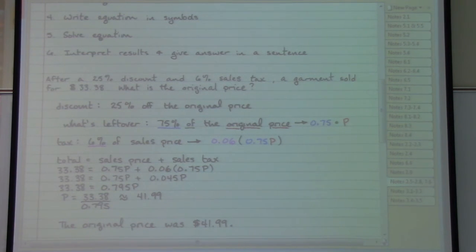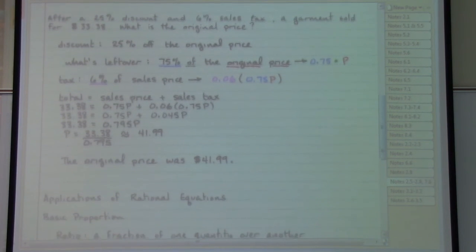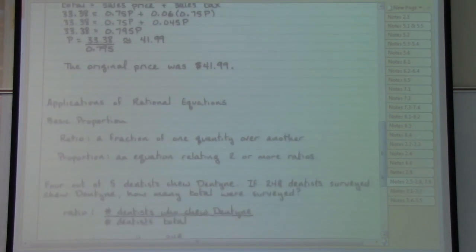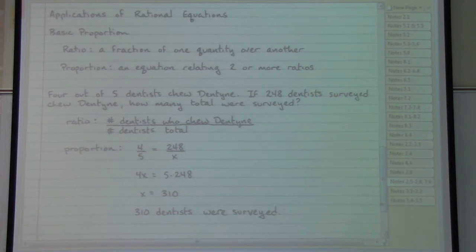One of the specific types of problems that can appear here, as well in the homework, connects to another idea worth mentioning, which is the idea of a ratio. So as an example of that, we'll refer back to one of the old chewing gum commercials. 4 out of 5 dentists chew dentine. Let's say the 248 dentists that were surveyed actually said that they chew dentine. How many total were surveyed? What we have here is a situation that's a little bit more specific that we can address that relates to ratios.